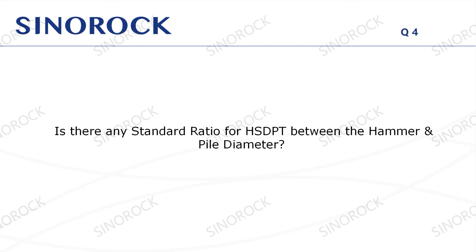Question 4: Is there any standard ratio for HSDPT between the hammer and pile diameter? The section size of the heavy hammer used for hammering should not be smaller than that of the pile top. The hammer should be a steel hammer with a well-proportioned texture and a flat bottom surface.